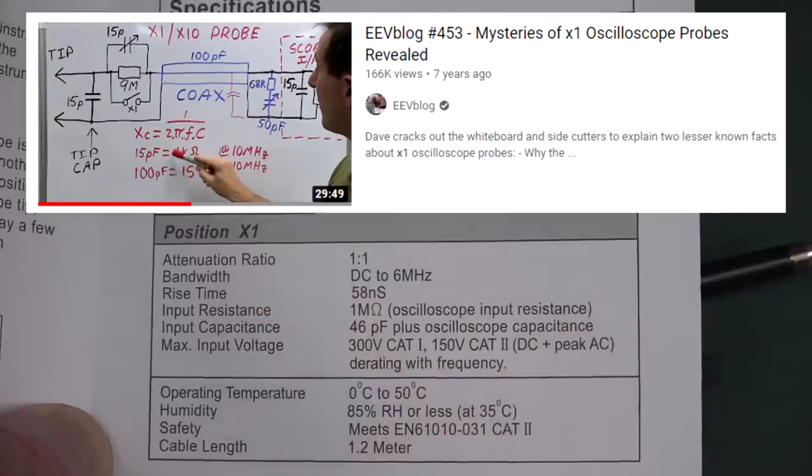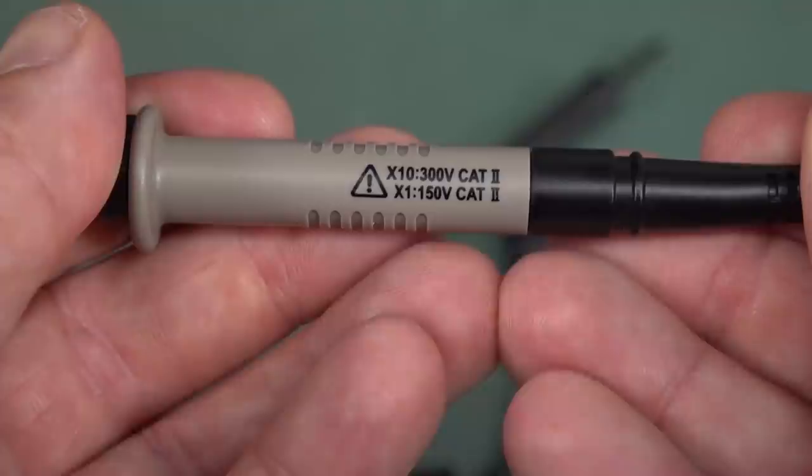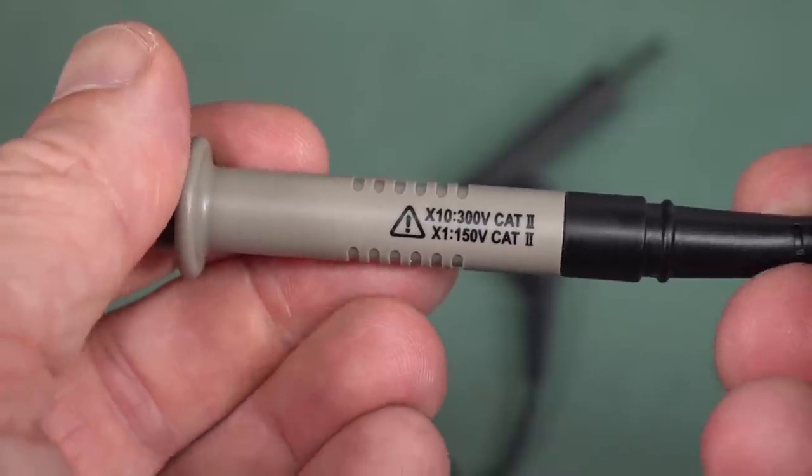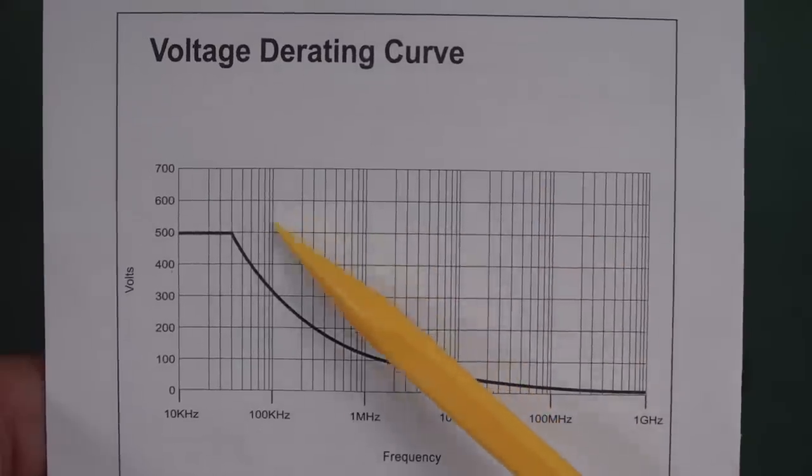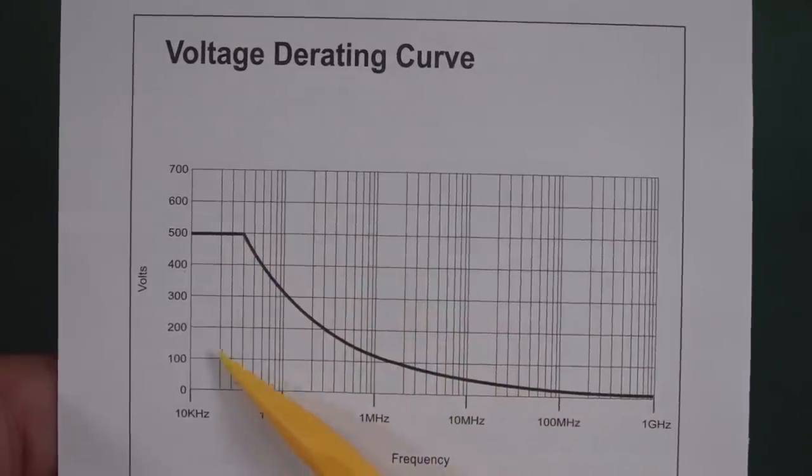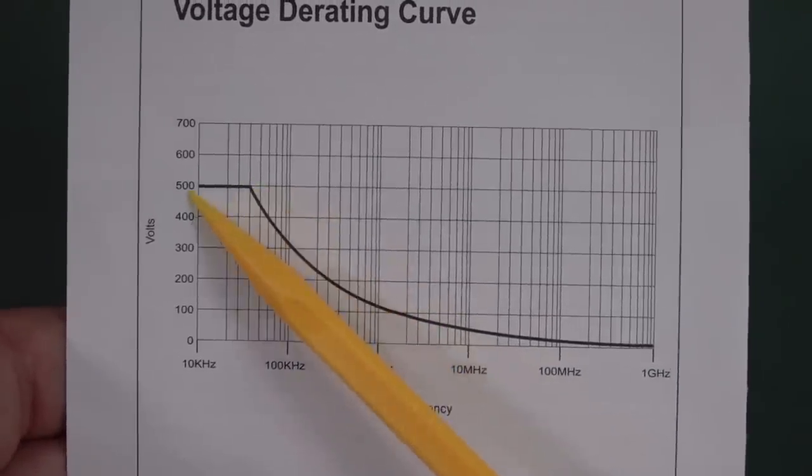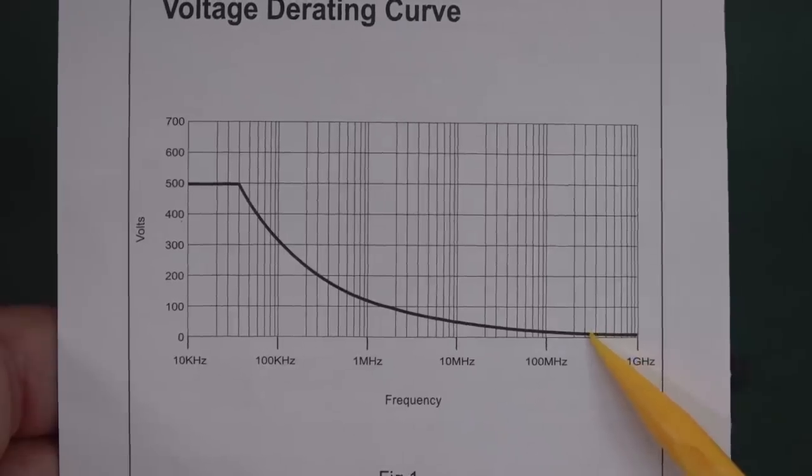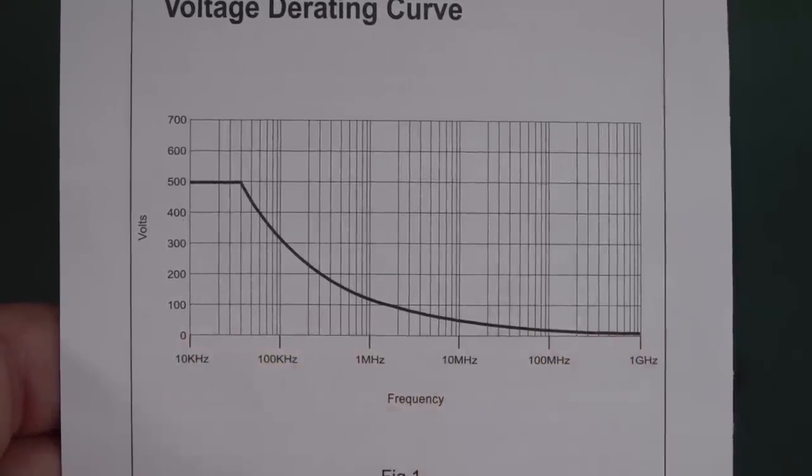RTFM 1 to 1 attenuation mode, DC to 6 megahertz bandwidth, rise time of 58 nanoseconds. And in x10 mode, you get the full bandwidth of the rise time of 1 nanosecond. And these probes are typically rated like 300 volts in x10 mode. But what you may not know, RTFM, is that the high voltage performance is very poor with frequency. It just drops off. About 40 kilohertz, this particular probe. So if you want to get the full 350 megahertz bandwidth, it's voltage rating is naff all.